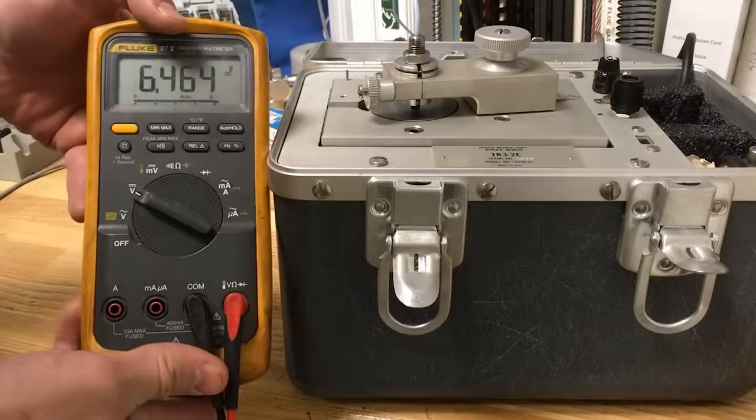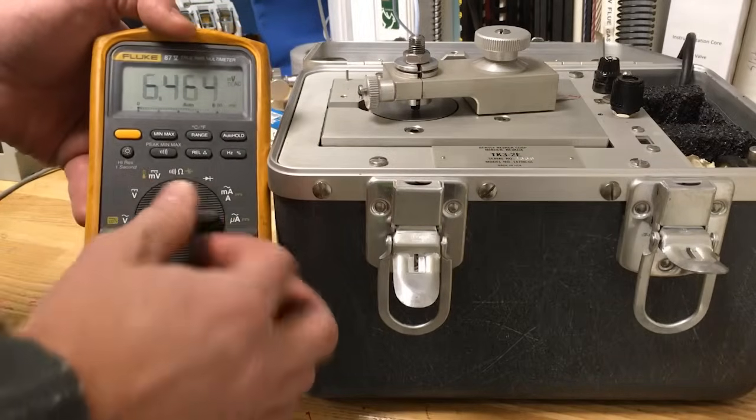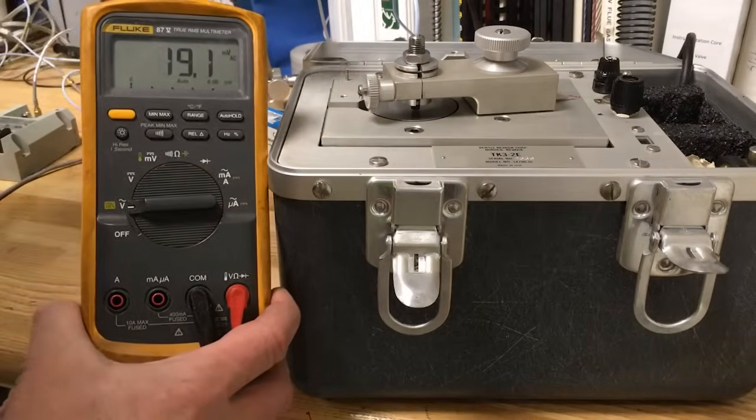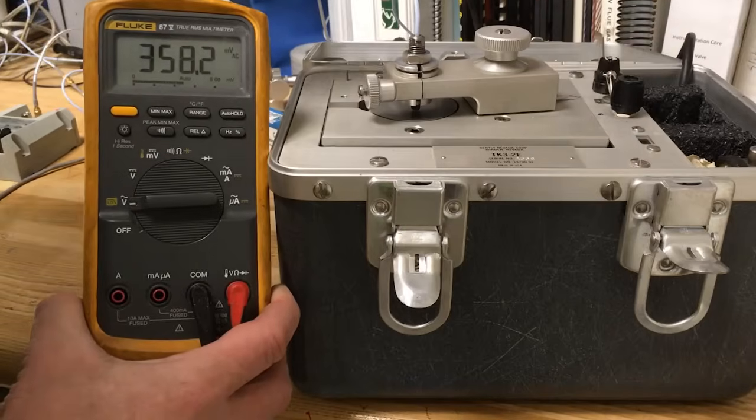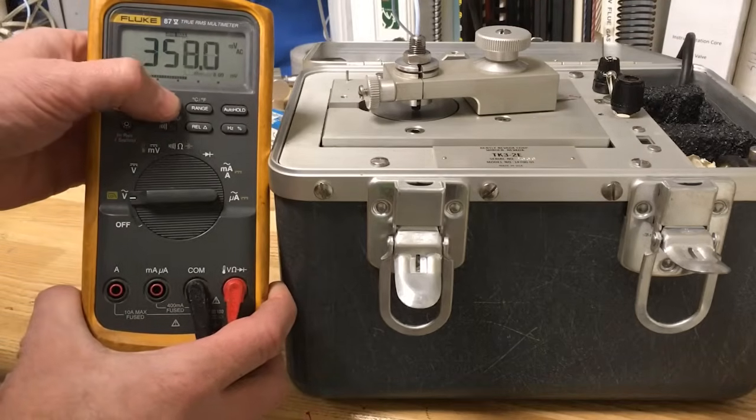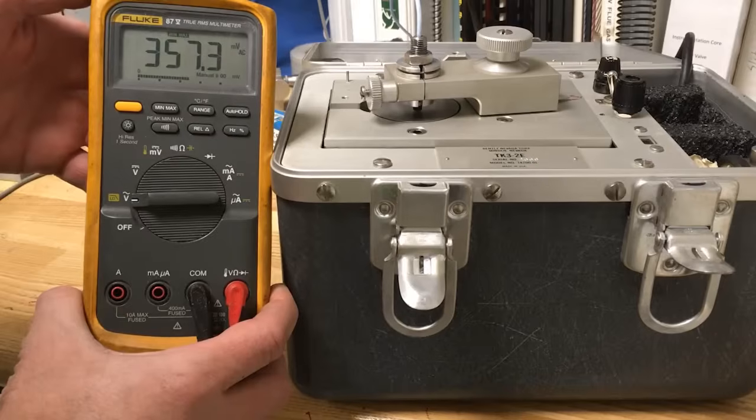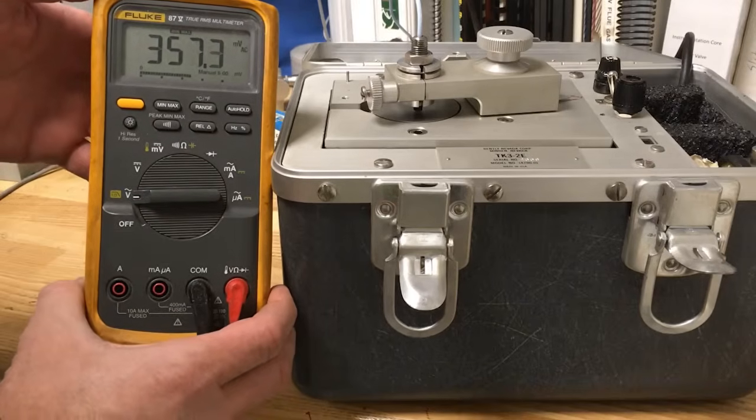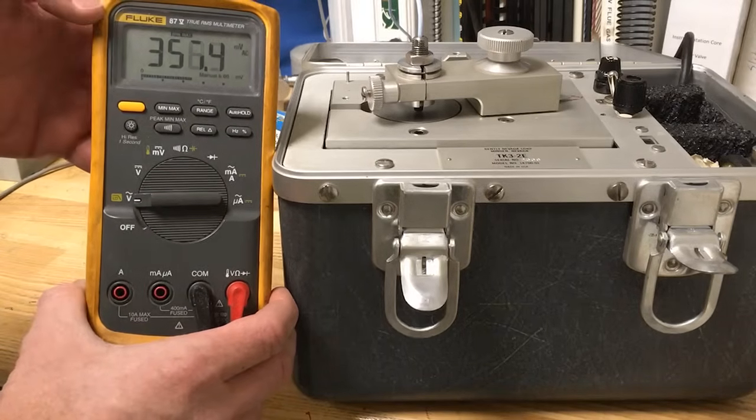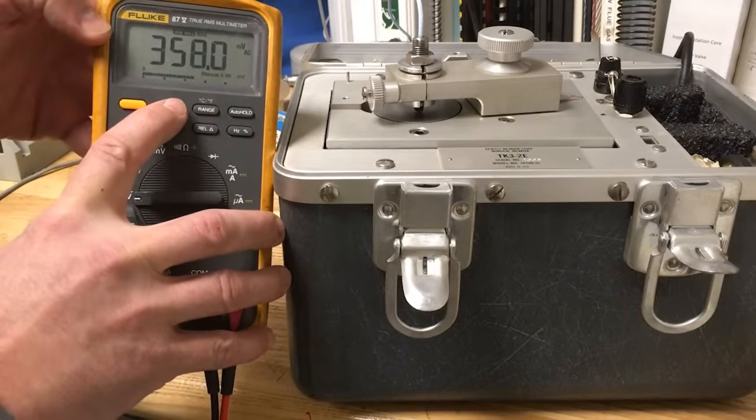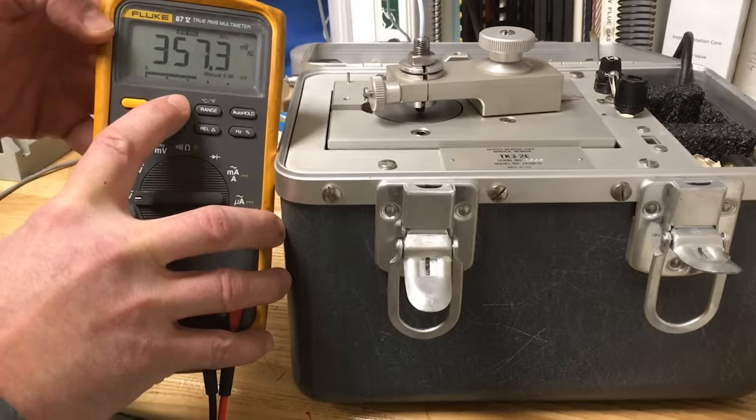Switch the voltmeter to read AC volts. Switch on the power and adjust the speed to the approximate speed of the machine the equipment will be installed on. If your multimeter is equipped with a min-max feature, this works the best. Just make sure that you do not activate this mode until the disc is rotating and the voltage value is stabilized.